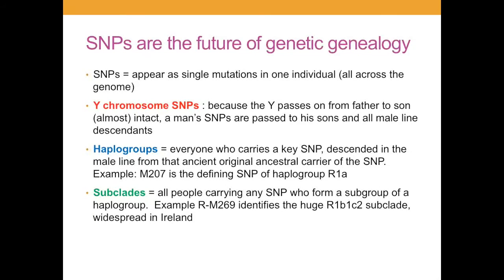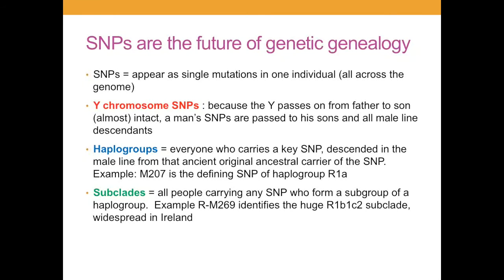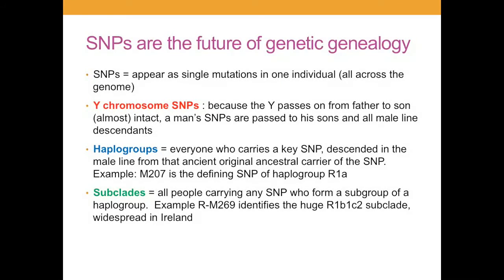A few quick definitions: haplogroups are the higher-level groupings marked by letters, where subclades would be any group marked by a common marker below that. All of these are marked by SNPs, and so anybody who has a SNP will have inherited it at some stage from an ancestor up through the male line — any time from your father right back to what's known as Y-chromosome Adam.